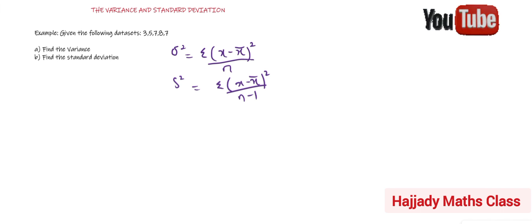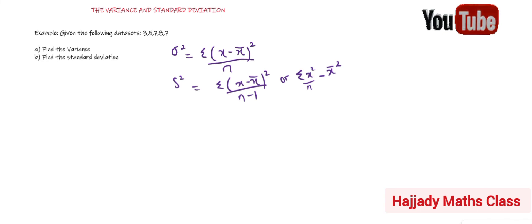Alternatively, the formula can also be written as: summation x² over n, minus x̄ squared. Don't forget that x̄ is the mean. We are going to use these two formulas to solve our example. Given the following data set: 3, 5, 7, 8, 7 — find the variance and also the standard deviation.